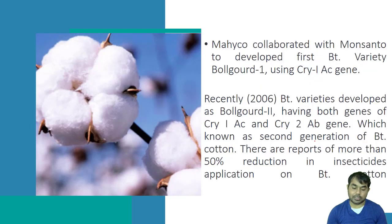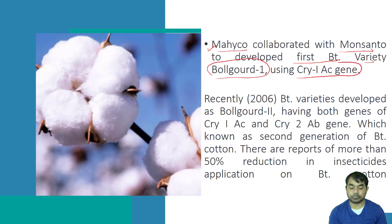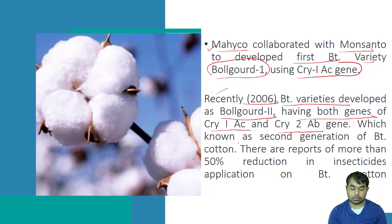The first time, Mahyco-Monsanto hybrid company in collaboration with Monsanto developed the first BT variety called Bollgard 1, which used the Cry1AC gene. In 2006, the BT variety Bollgard 2 was developed, having both genes — Cry1AC and Cry2AB — and that is known as the second generation of BT cotton.